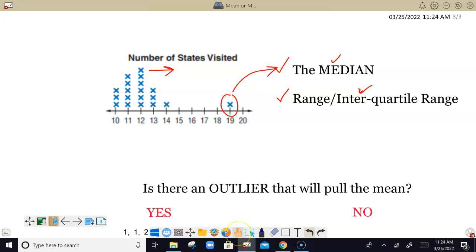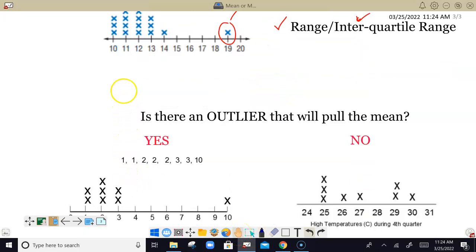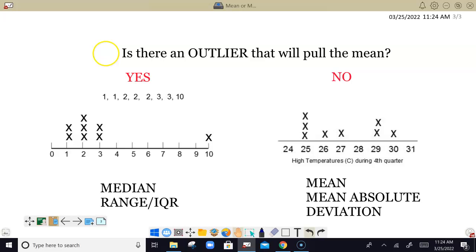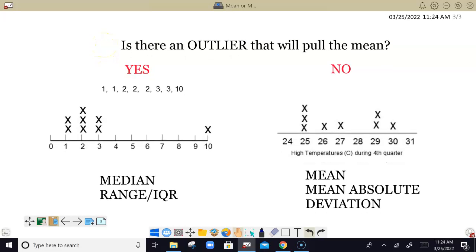So here's our summary right here. Here's what you want to ask yourself when deciding which one to use. Is there an outlier that will pull the mean away and not give an accurate description? If so, like in this case right here, we want to use the median and then the range and the interquartile range for variability. If not, then we use the mean and the mean absolute deviation for our measures. Thank you very much.